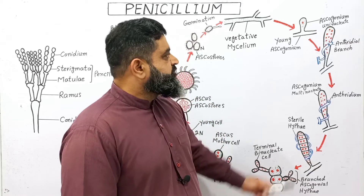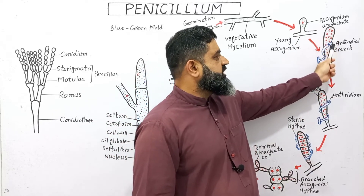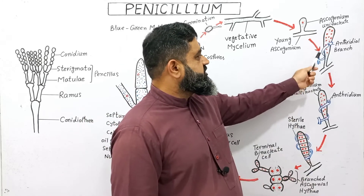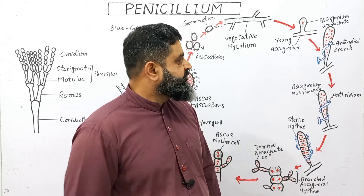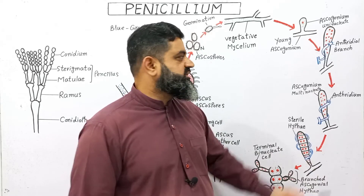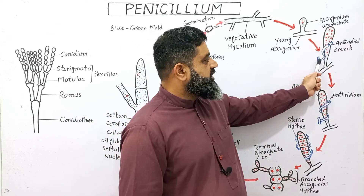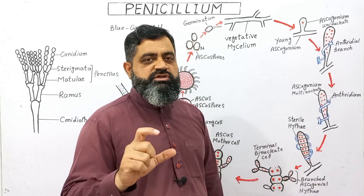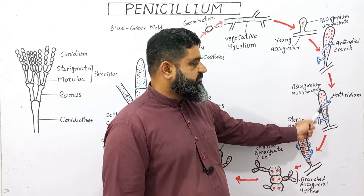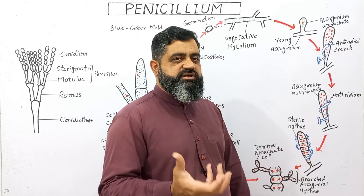This young ascogonium starts to elongate into a long tubular structure. The nucleus inside multiplies by mitosis, and the structure becomes multi-nucleate, containing many haploid nuclei. At the same time, some hyphae of the fungus form an outgrowth that develops into an antheridial branch, which is the male reproductive organ. As shown in the diagram, the blue part represents the antheridial branch, which also contains haploid nuclei. The ascogonium has now reached maximum size and nuclei count, and the antheridium has also reached its final size, both containing haploid nuclei.